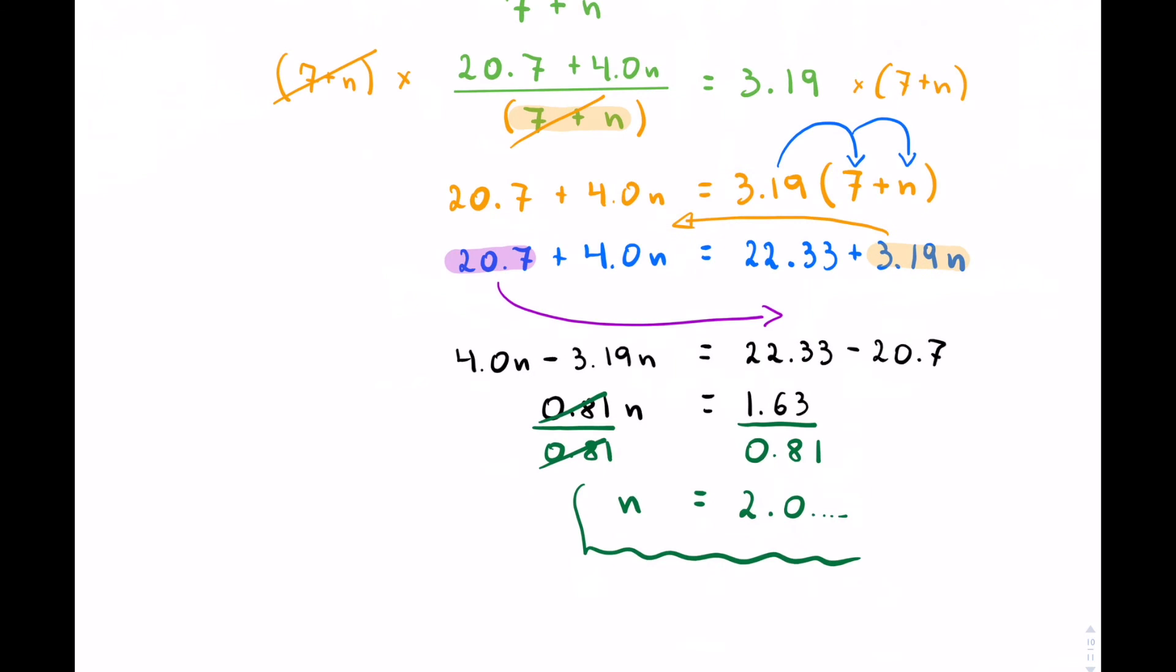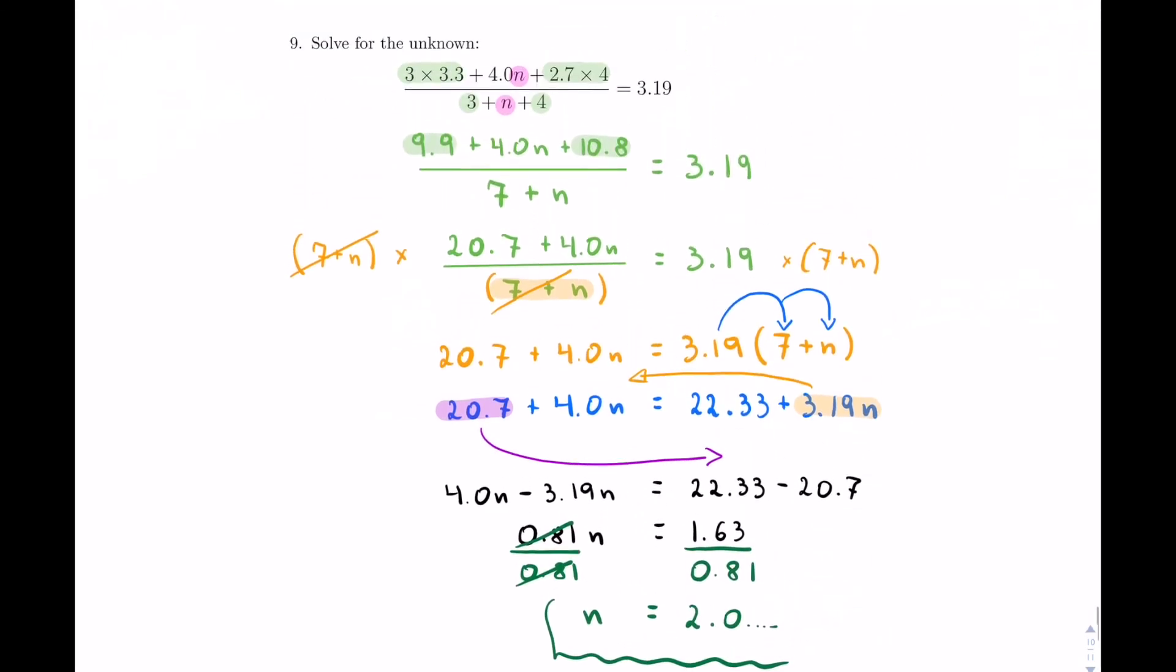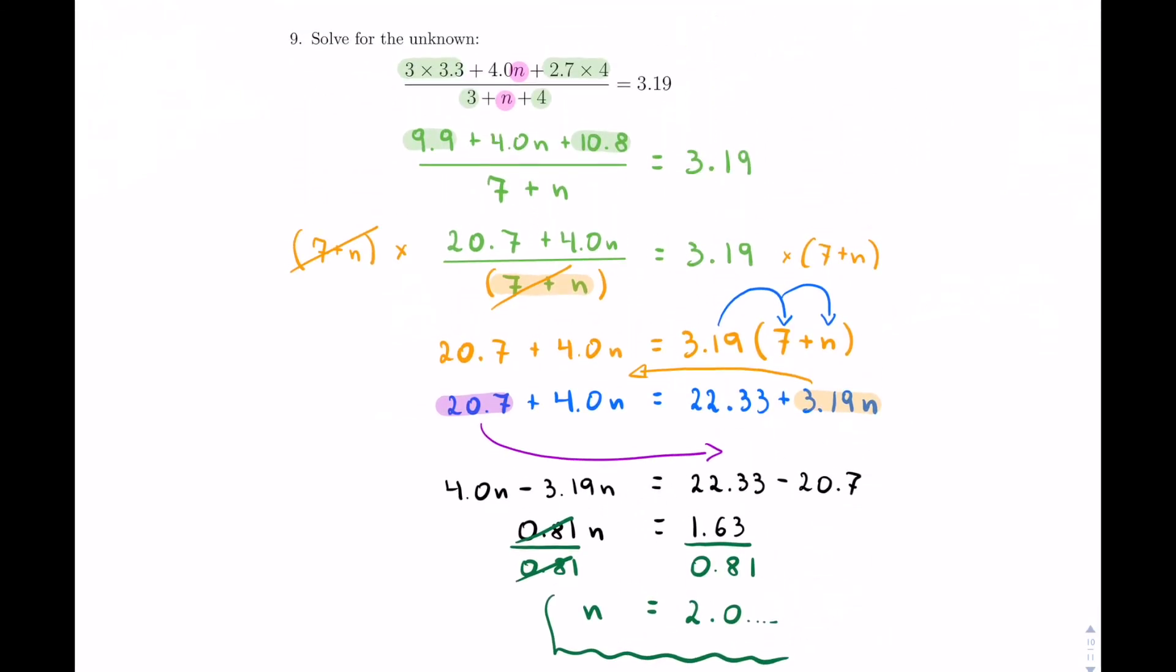The key to this example as you're looking at it is this point right here. You have to be aware that you can always get rid of a denominator by simply multiplying by it so that it cancels off. All right, that's all.